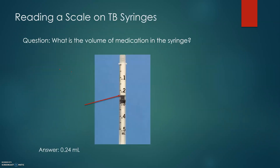Reading a scale on a tuberculin syringe — Question: What is the volume of medication in the syringe? We look at the scale: 0.1 is right here, then we have 0.2, and after that we count 4 additional units. Each unit is 1 hundredth of a milliliter, so that brings us to 0.24 milliliters.